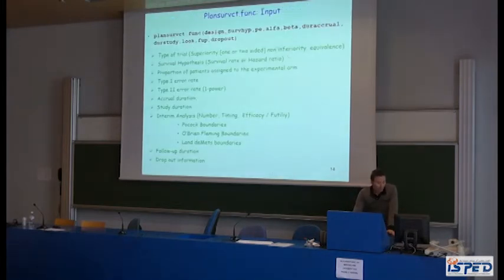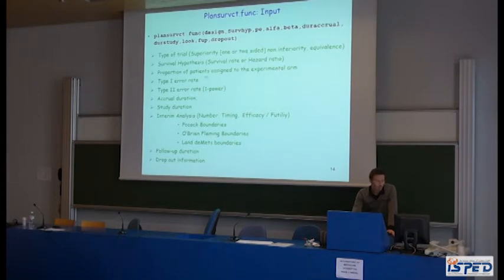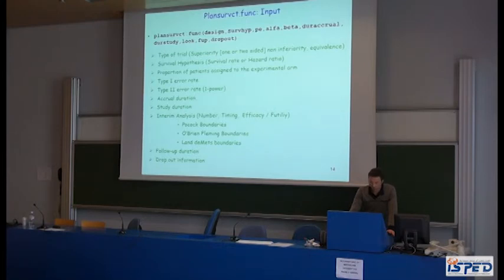The R function has 10 arguments: the type of trial (superiority, non-inferiority, or equivalence); the survival hypothesis; the proportion of patients allocated to the experimental arm; the type 1 error rate; the type 2 error rate; the accrual duration; the study duration; the number of looks; the type of boundary and timing in case of planned interim analyses; and the type and duration of follow-up, along with the dropout rates in the experimental and control arms.